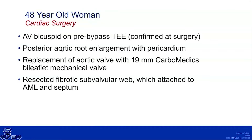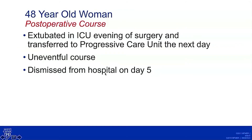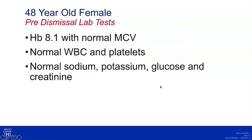Because she only had a 19 mm LVOT diameter, she had a posterior aortic root enlargement with pericardium, but even then the largest valve that could be placed was a 19 mm carbometic — a bileaflet mechanical prosthesis. She was also found to have a little subvalvular web attached to the mitral leaflet and septum, thought not to be obstructive by either TEE or the surgeon, but it was resected. She had an uneventful course and was dismissed on hospital day five with a hemoglobin of 8.1.